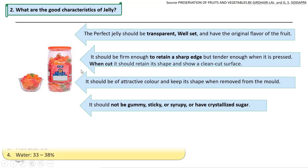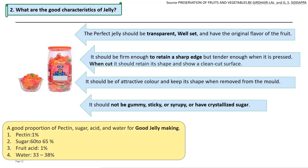To prepare a final product with good quality, the proper ingredient proportions must be maintained: pectin 1%, sugar 60–65%, fruit acid 1%, and water 33–38%. These proportions are required to properly maintain the jelly manufacturing process.